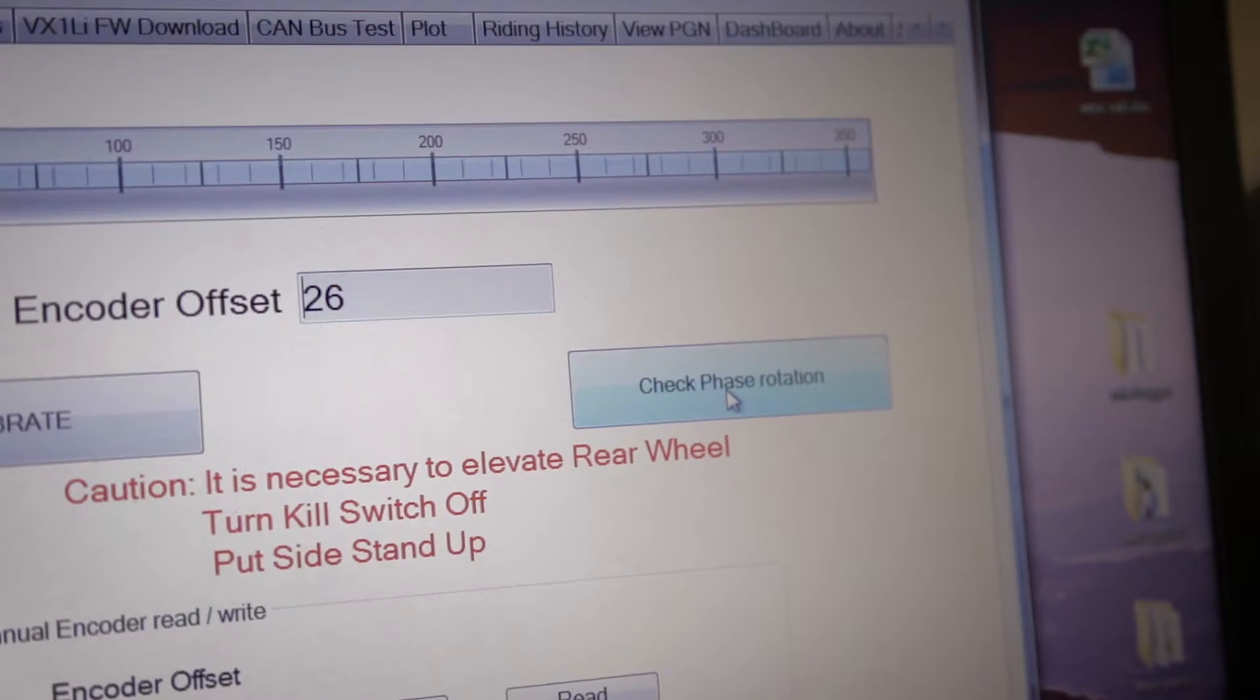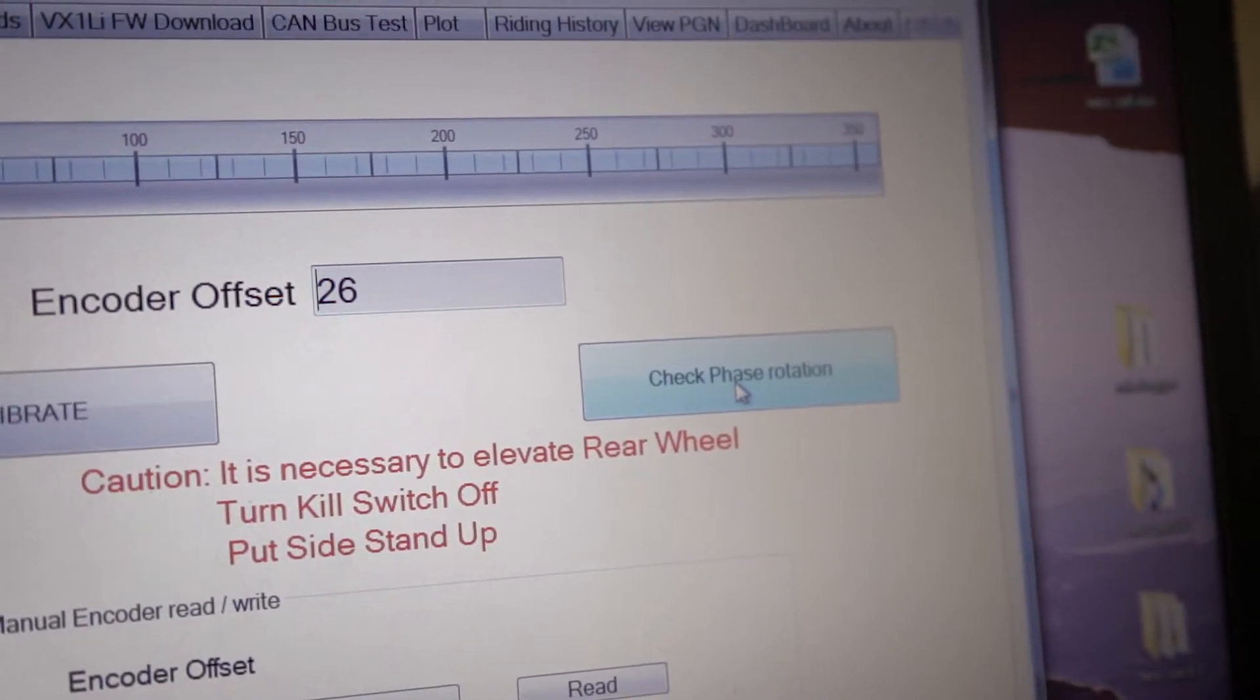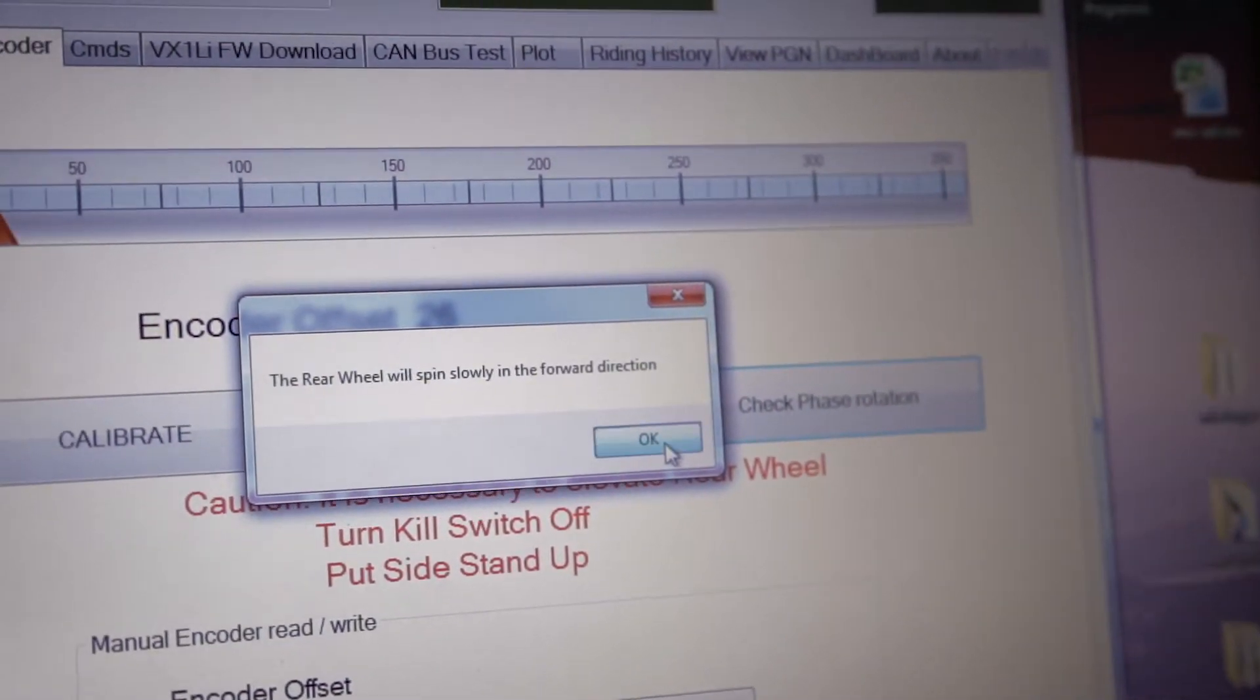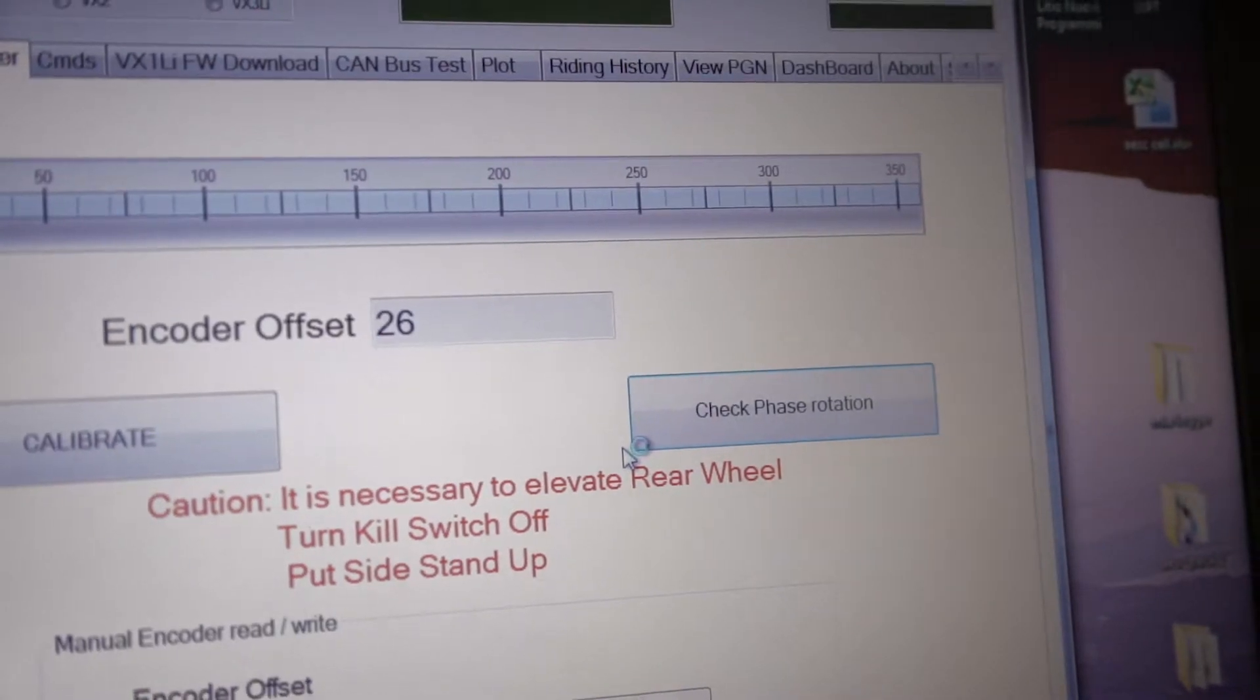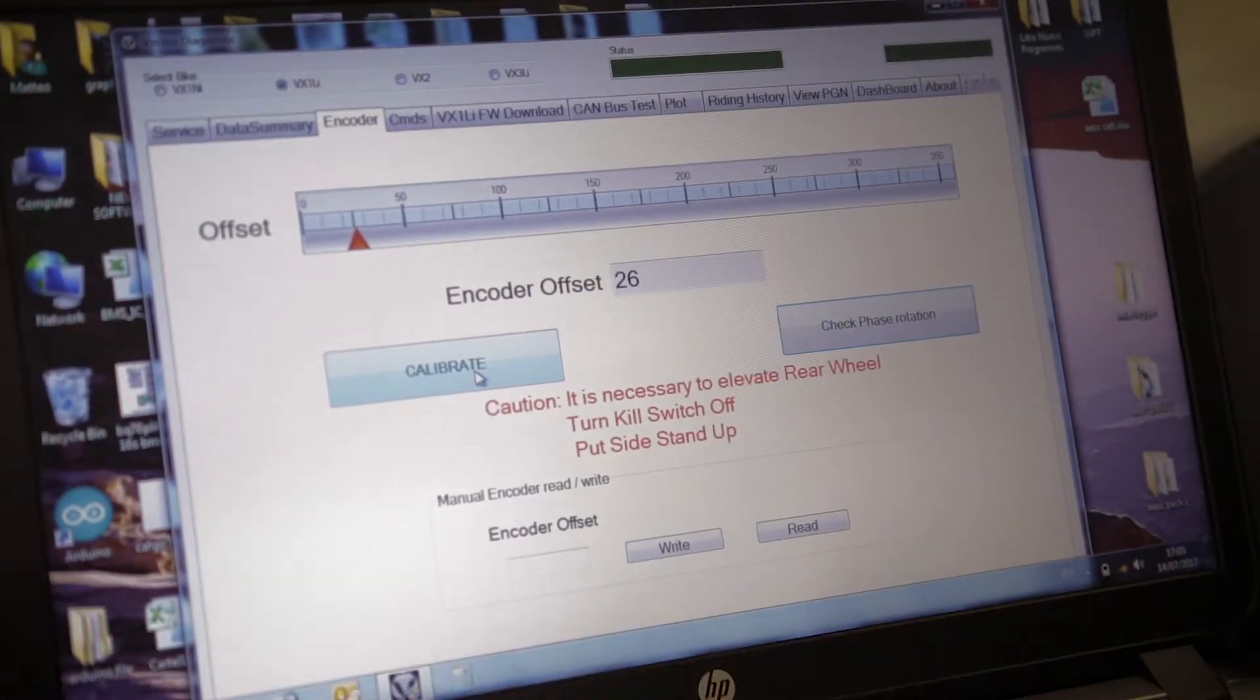Before, by mistake, you connect the ACB for example, the motor will rotate in the wrong direction. So check phases rotation. It will force the motor to rotate. It will rotate forward, has to rotate forward.